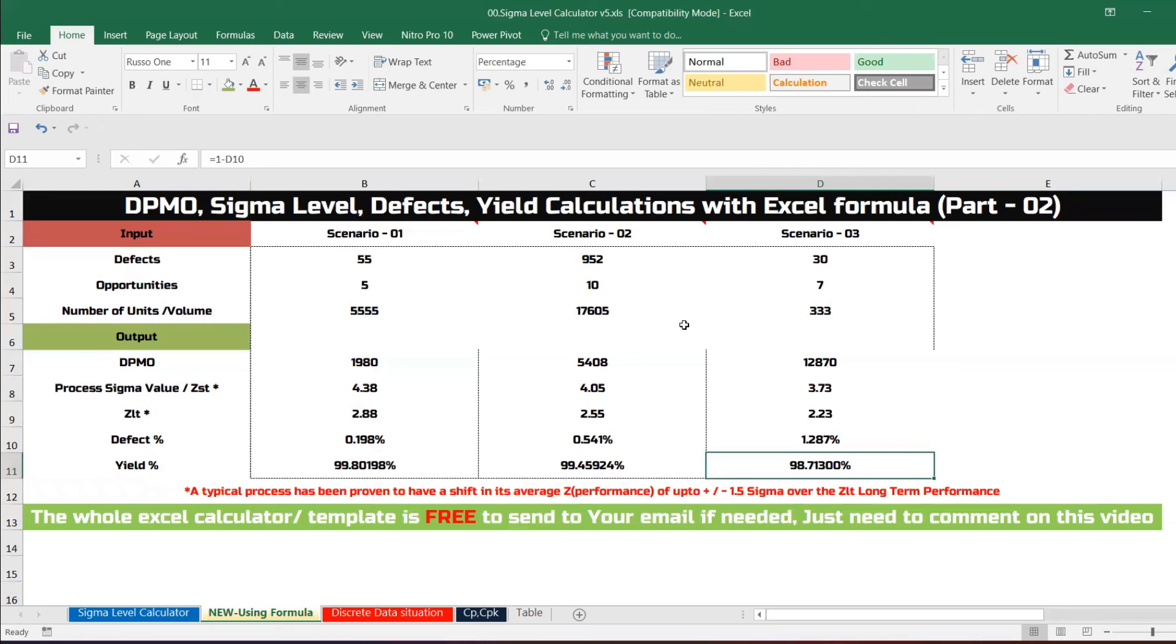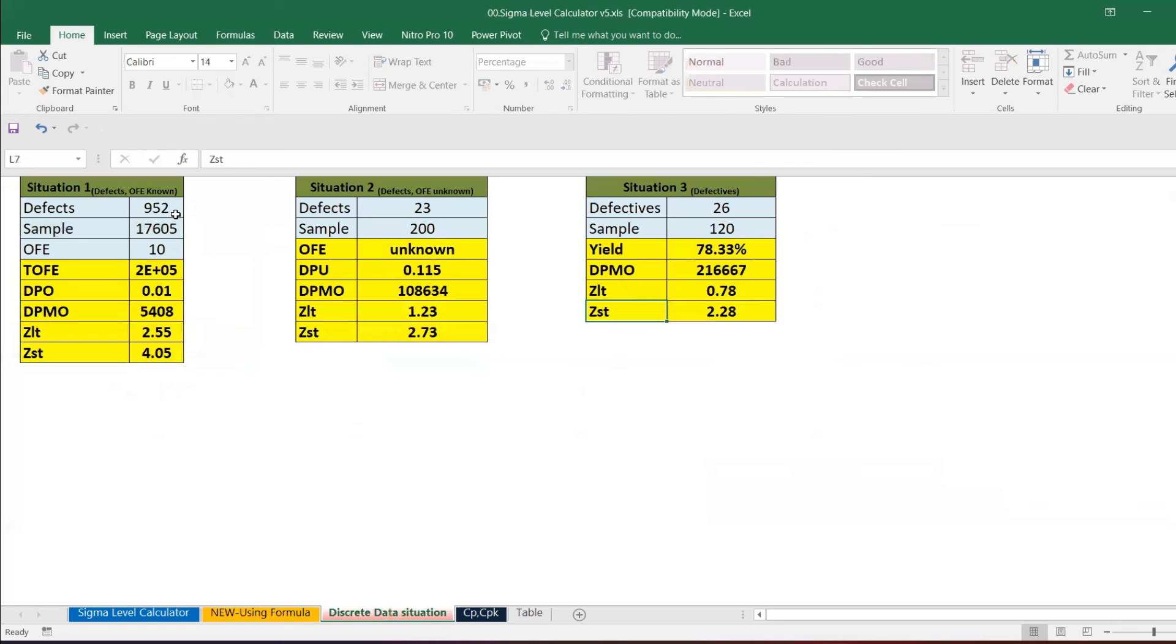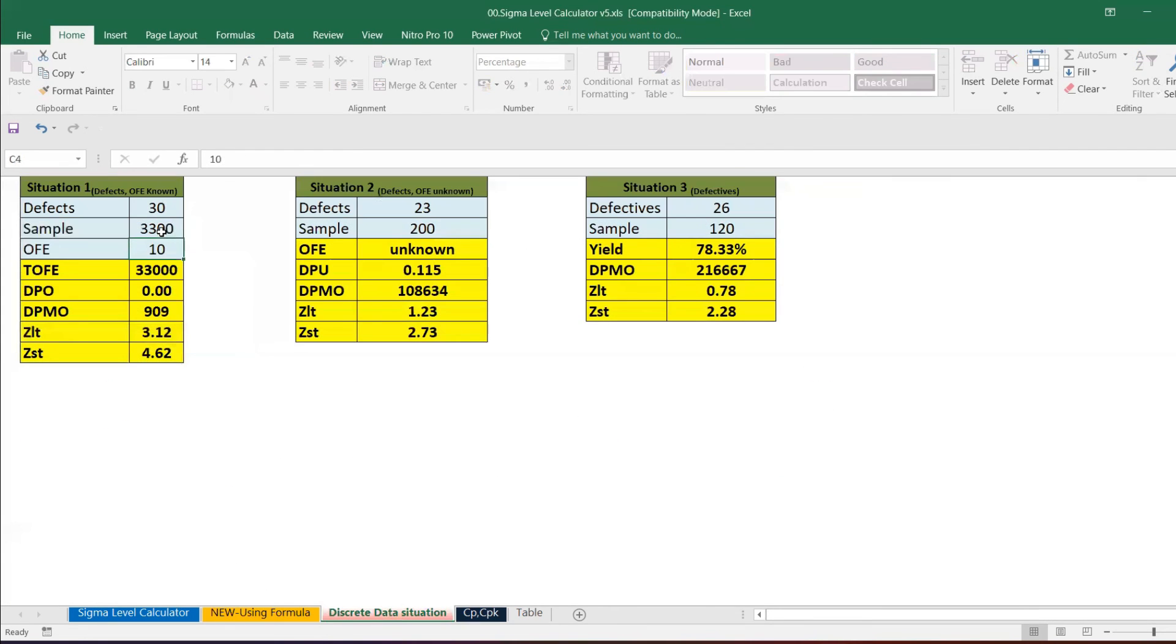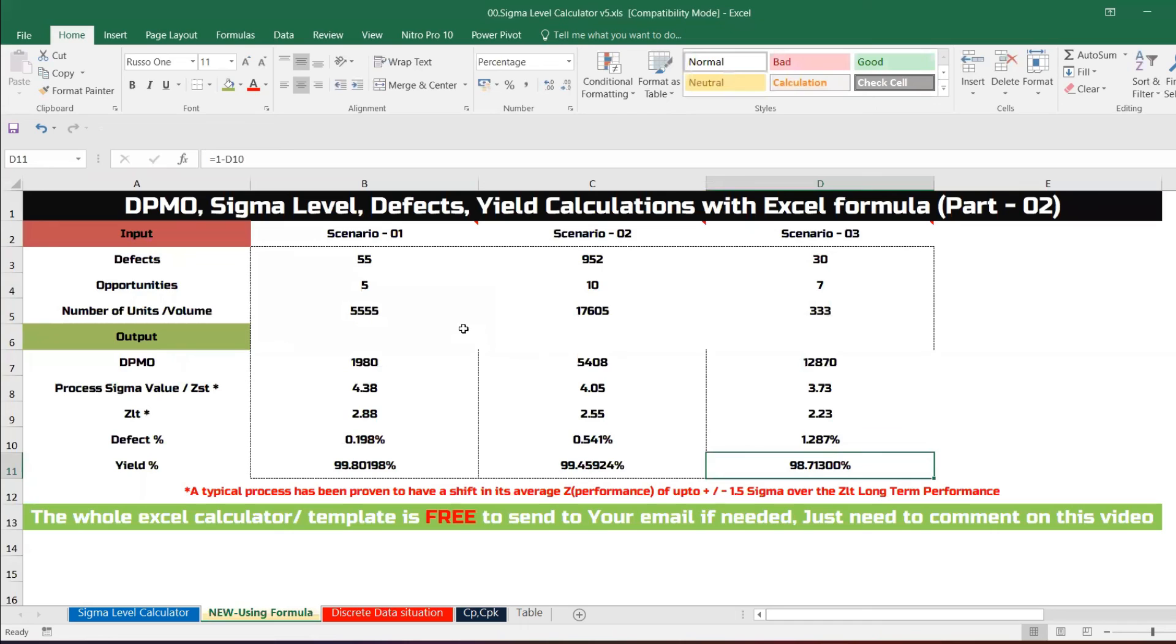Same case I will feed it here. The defects are 30 and samples are 333. DPMO 12,870, the same value we have got. Whatever the formula, the only thing is here you will find the formula and you will find it interesting, that's what the second version is being made.